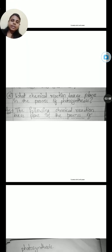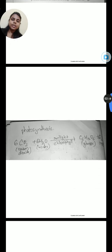Fourth question asks, what chemical reaction takes place in the process of photosynthesis? The following chemical reaction takes place in the process of photosynthesis: 6CO2 plus 6H2O in the presence of sunlight and chlorophyll gives C6H12O6 plus 6O2. Carbon dioxide plus water in the presence of sunlight and chlorophyll gives glucose and oxygen.